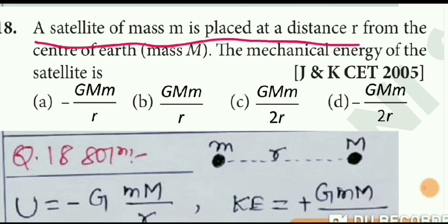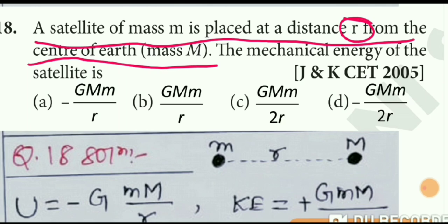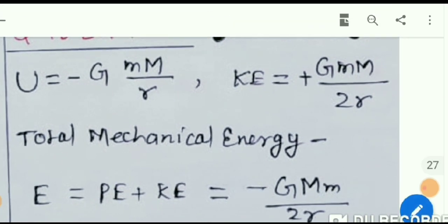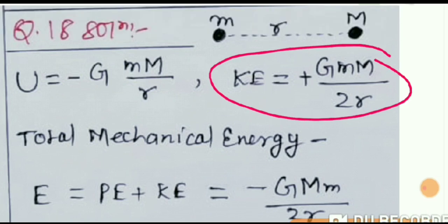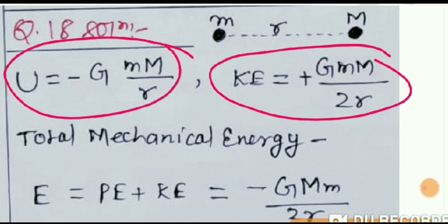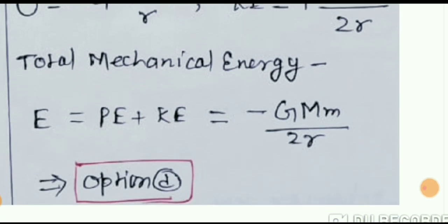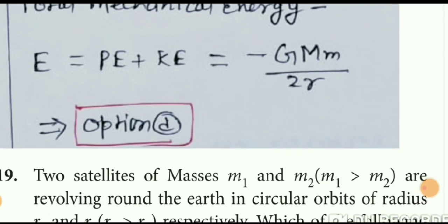Question number 18: a satellite of mass M is placed at distance r from the center of the Earth with mass capital M. Find the mechanical energy (kinetic plus potential energy). The kinetic energy is positive and the potential energy is negative, equal to twice the kinetic energy in magnitude. Total mechanical energy comes out to −(1/2)·G·M·m/r. The correct option is D.